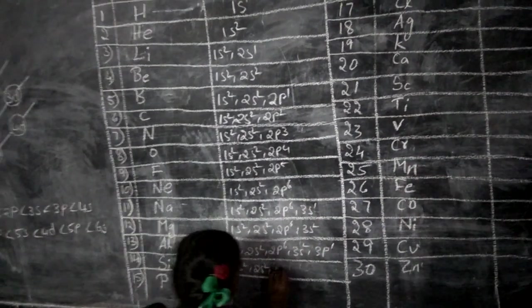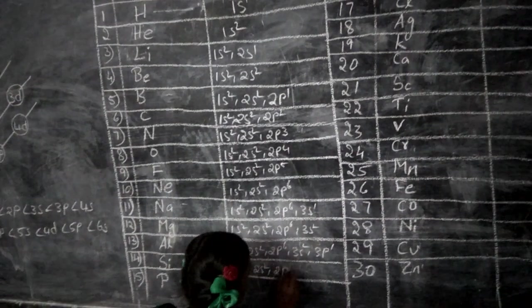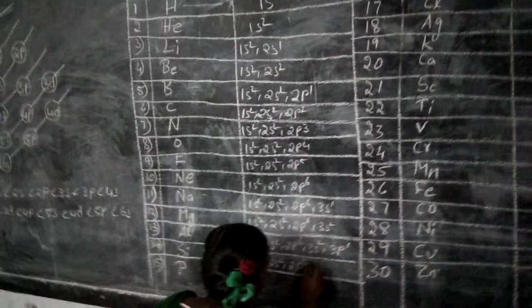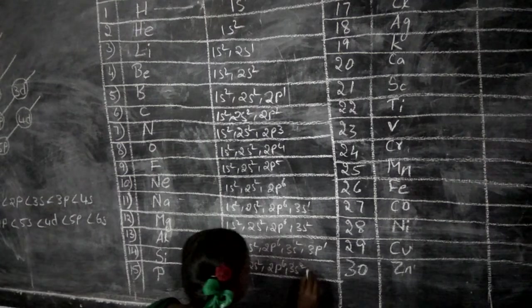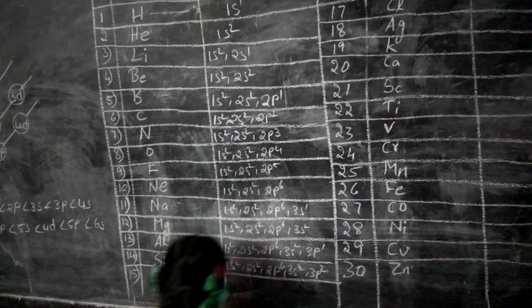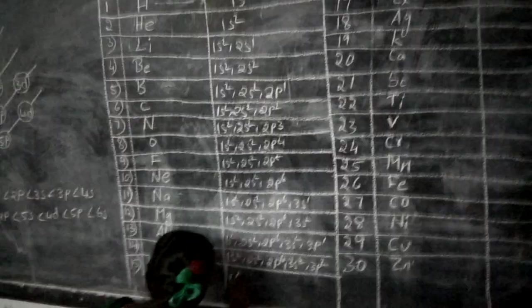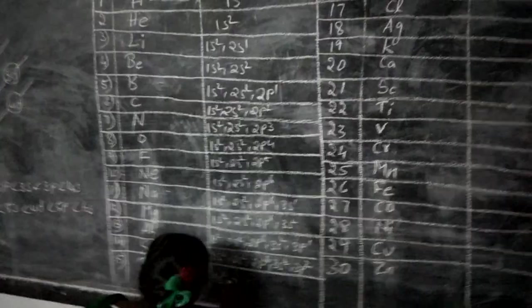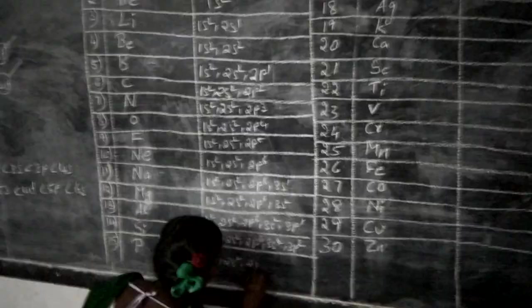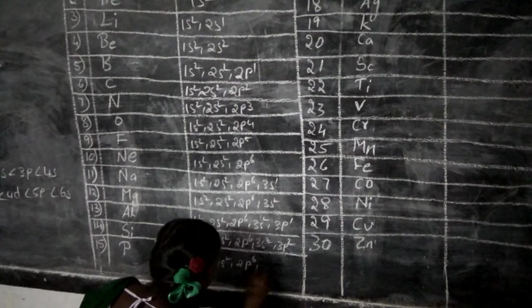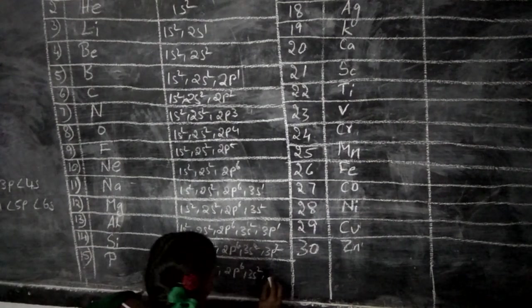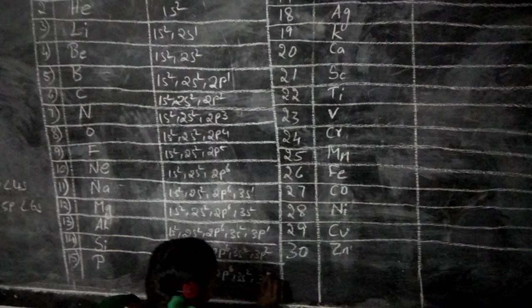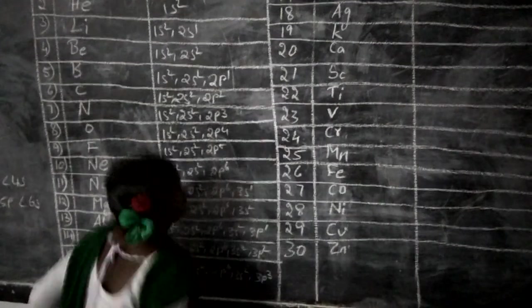1s2, 2s2, 2p6, 3s2, 3p3. 1s2, 2s2, 2p6, 3s2, 3p4.